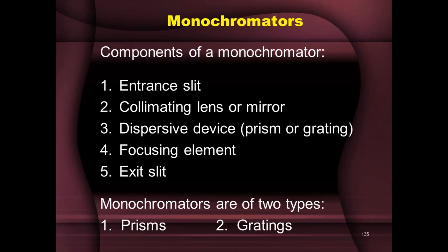Then you have a focusing element — a lens or a mirror — which converges the radiation onto a focal plane that has an exit slit. The fifth component is the exit slit on the focal plane. Through the exit slit, the radiation exits out of the monochromator and is naturally incident on the next component, which is the sample cell containing the sample.